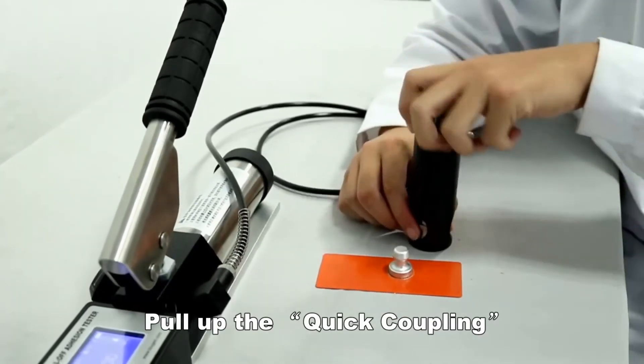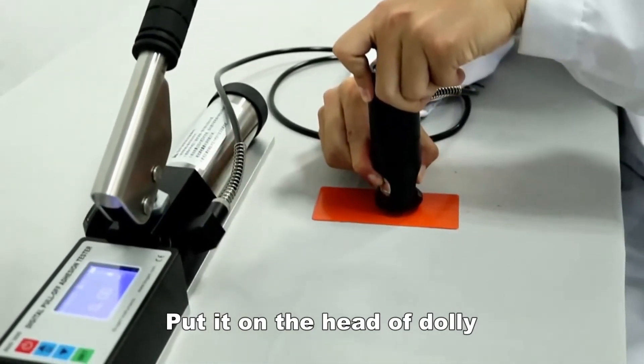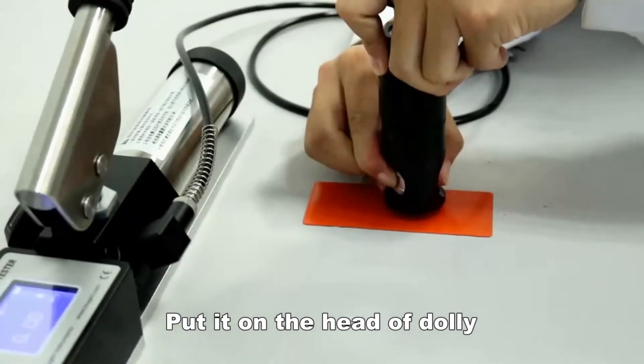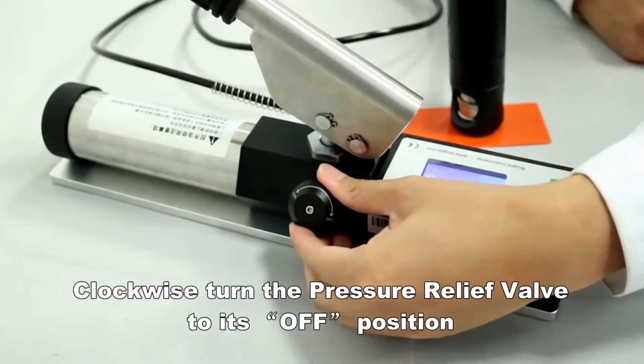Pull up the quick coupling. Put it in the head of the dolly. Clockwise turn the pressure relief valve to its off position.